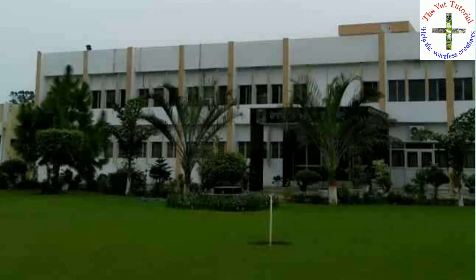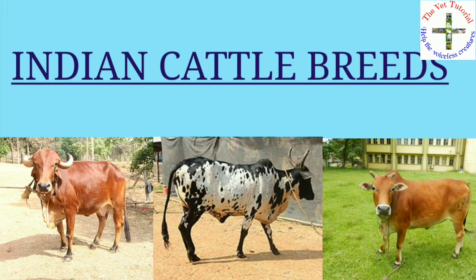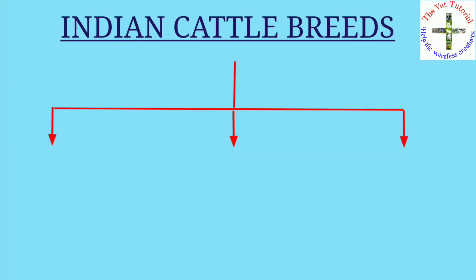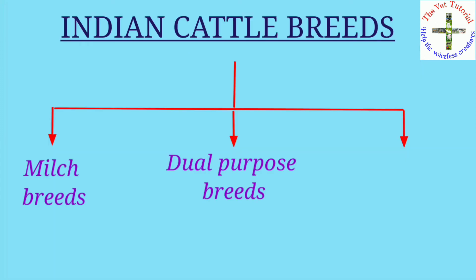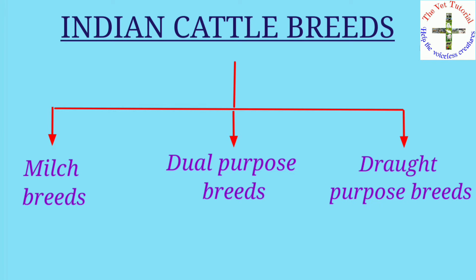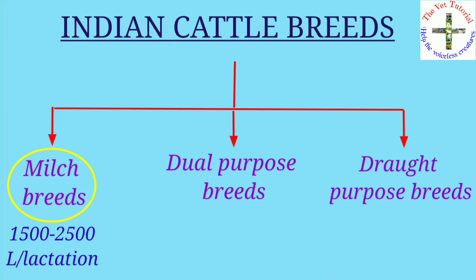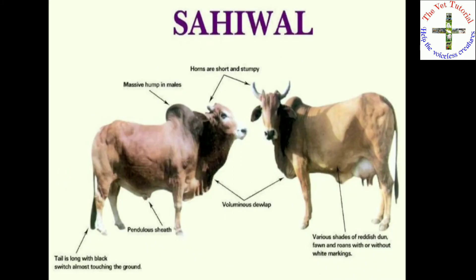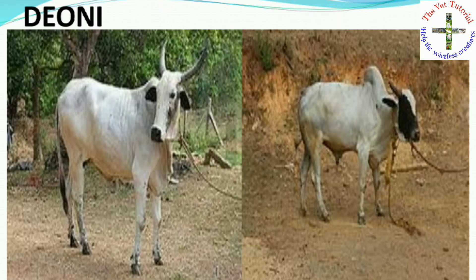Now let's start with the classification of Indian breeds. It is divided into three types: milch breed, dual purpose breed, and drought purpose breed. In the milch breed category, cows are high yielders and milk yield varies from 1500 to 2500 liters per lactation. The cows included under this category are Gir, Sahiwal, Red Sindhi, and Deoni.